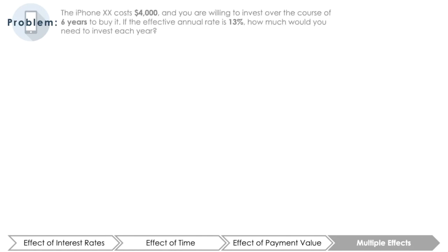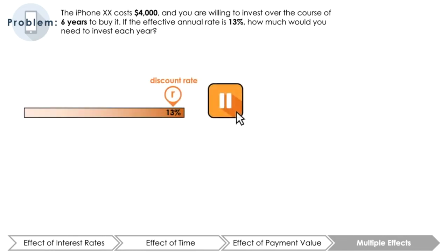Up until this point, we isolated each variable to determine its relationship with PV. But what happens when you change multiple variables? Let's unpack this further. Say the iPhone 20 still costs $4,000 and you are willing to invest over six years in order to buy it. If the effective annual rate was 13%, how much would you need to invest each year? Pause here and calculate the value of A in this example. Note that you will need to use the FV of a standard annuity here.